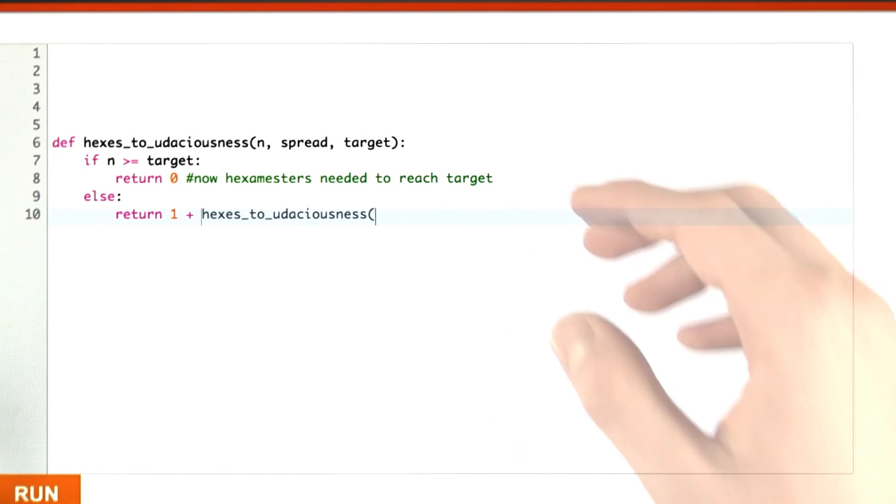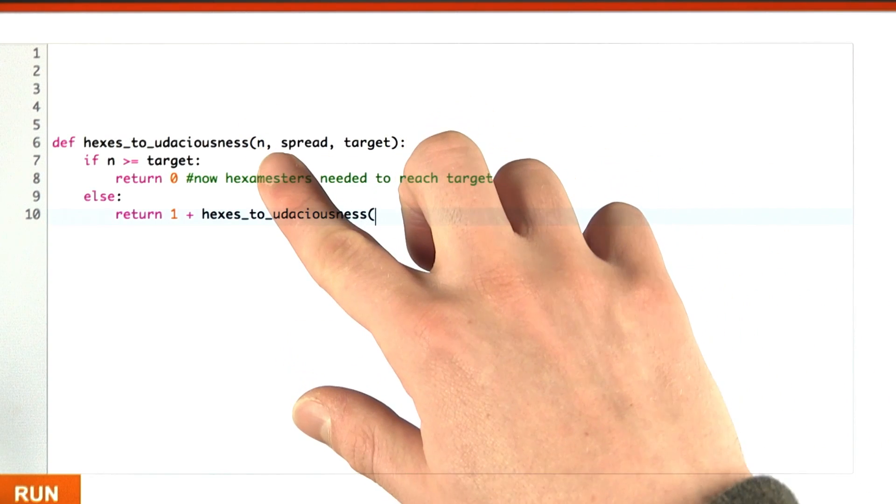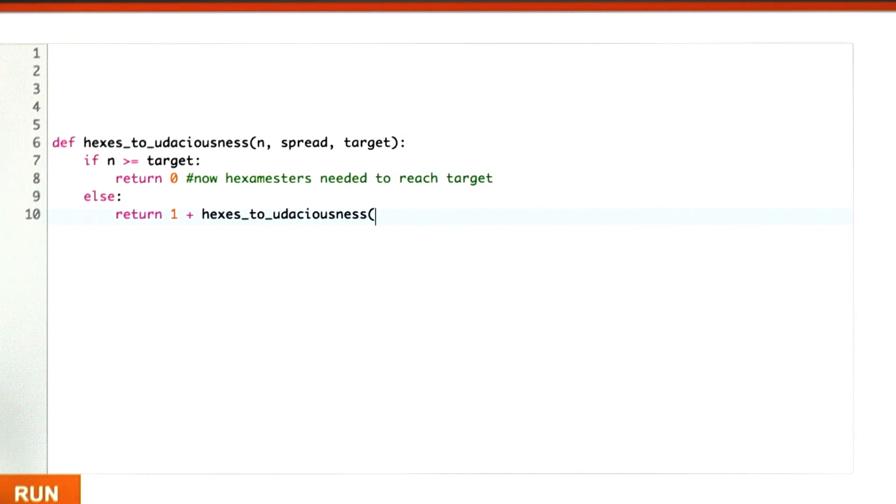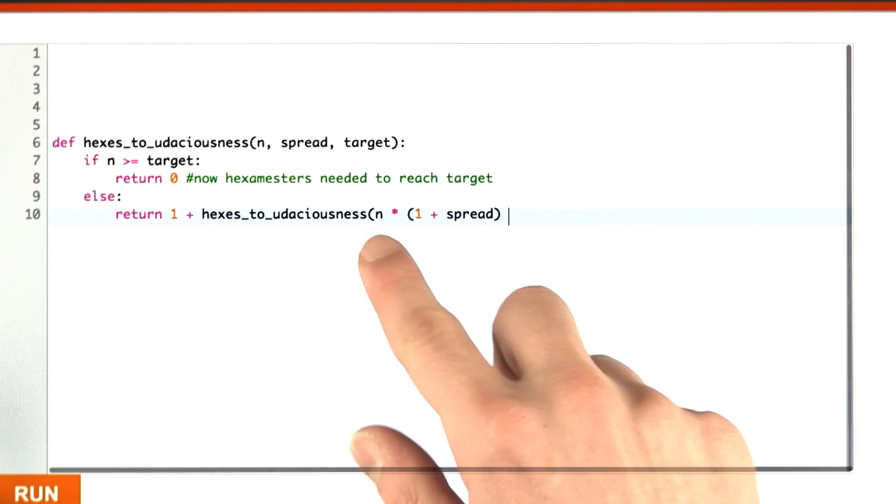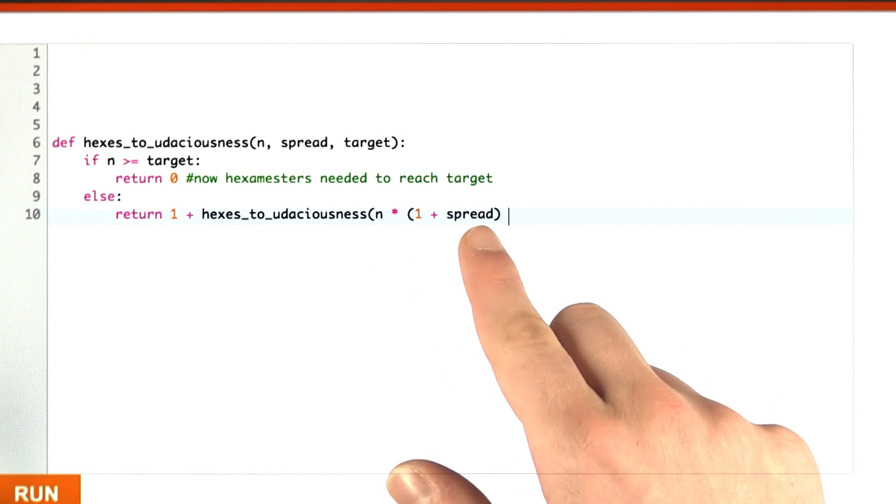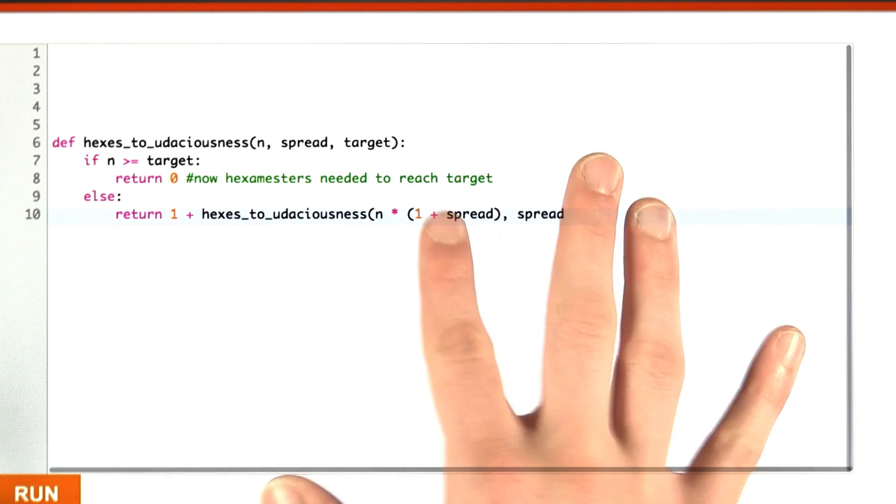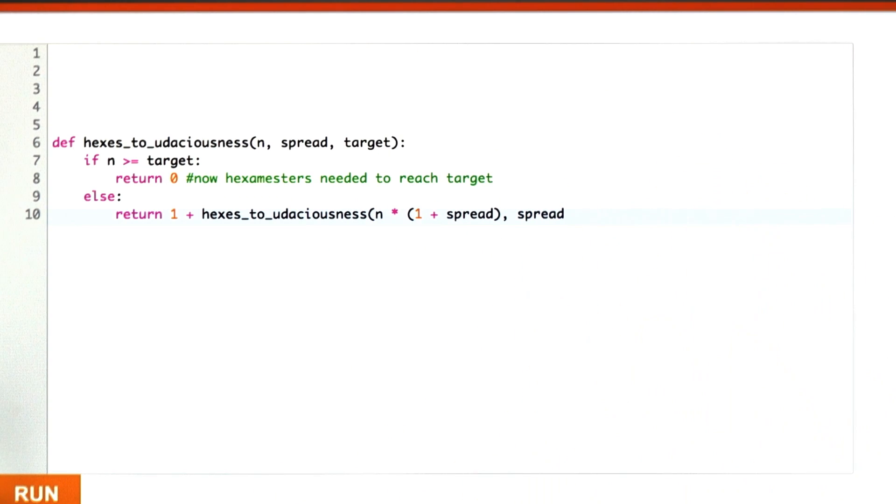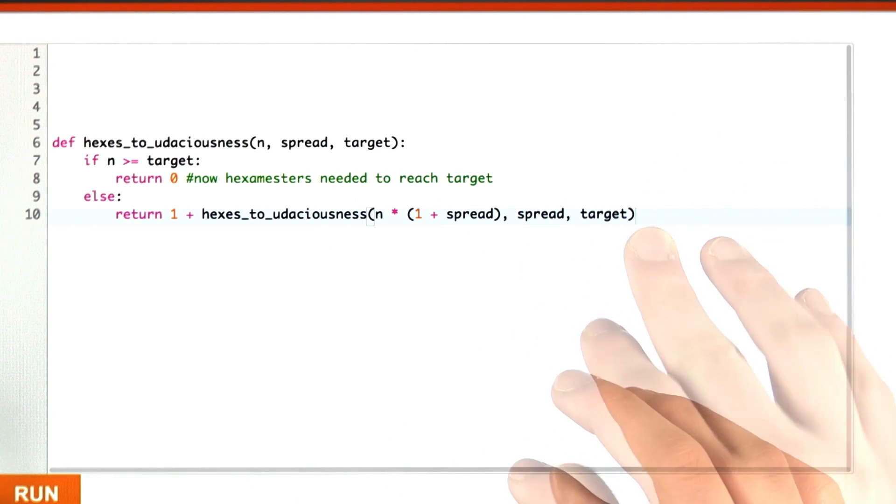The first thing we need is n. Well, n is going to be the same thing as last time plus how many new people we've gotten, which is spread times n. A more succinct way of writing this would be simply n times (1 + spread). The spreading rate doesn't change, so we're going to leave that alone. And our target doesn't change. And that's it, we're done.